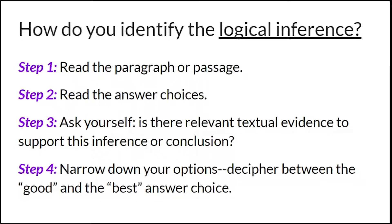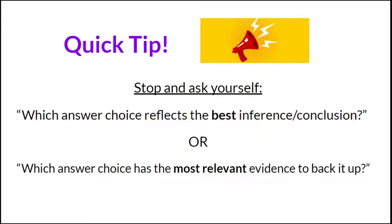You need to decide between the good and the best answer choice. The good answer choice might be based on evidence from the text, but not the text as a whole. The best inference might be made about the text as a whole and has the most evidence to back it up. Quick tips: ask yourself which answer choice reflects the best inference or conclusion, or which answer choice has the most relevant evidence to back it up.